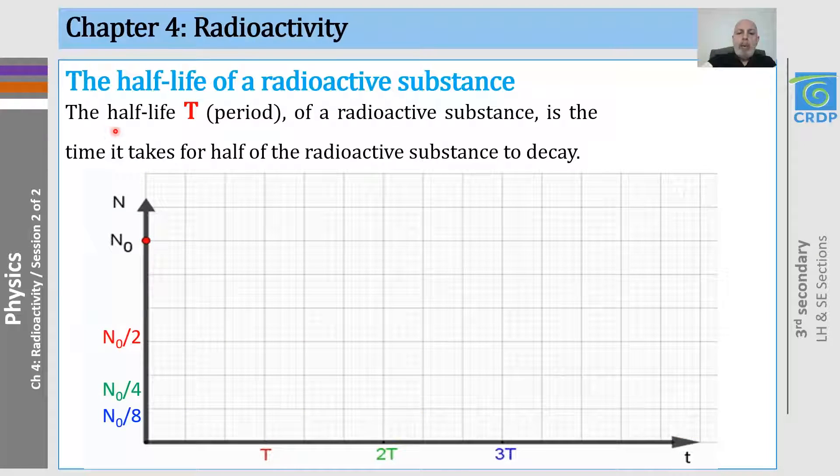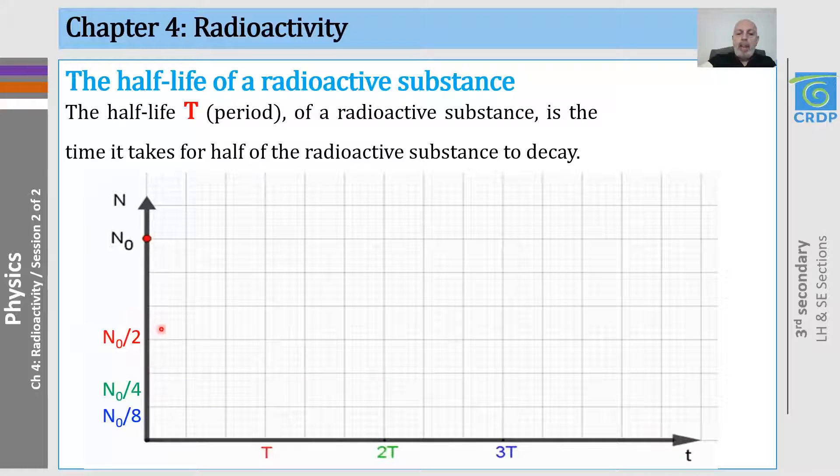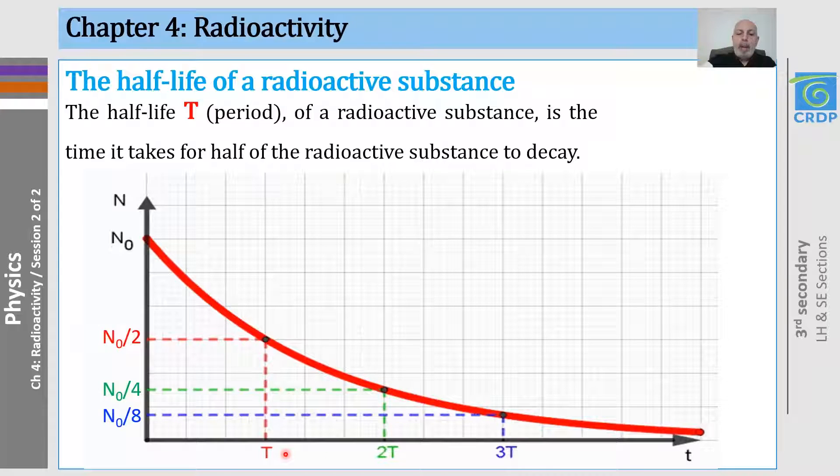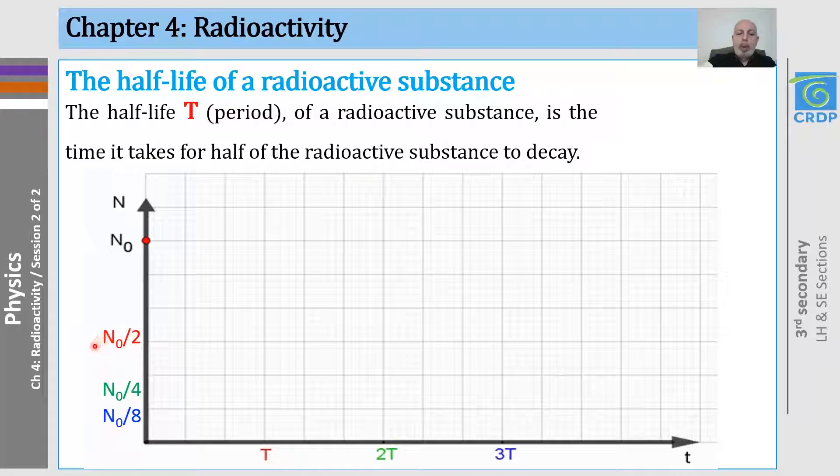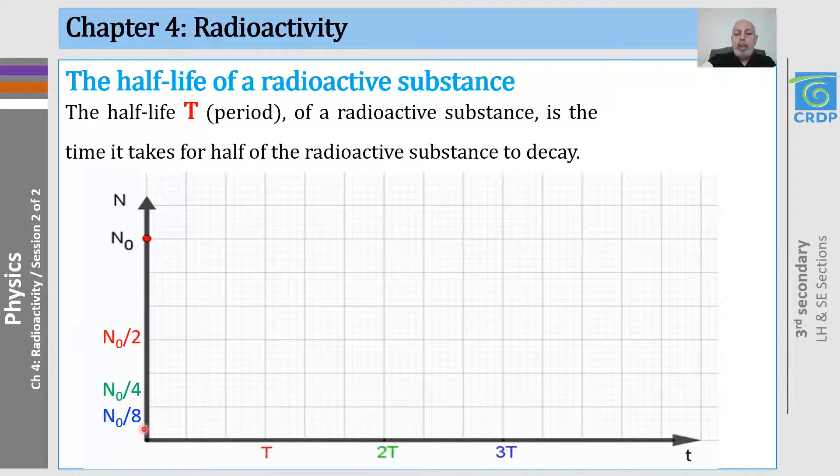How can we find the half-life t using this graph? This is the initial number. If we find the corresponding number, then what we will do is take half of it. After taking half of it, let's try to find the corresponding time. It is t, the period or half-life. After another period, of course, we will have a remaining amount that will be half of this too, n0 over 4. Then, after another period, n0 over 8. To make things clearer, let me give you an example.